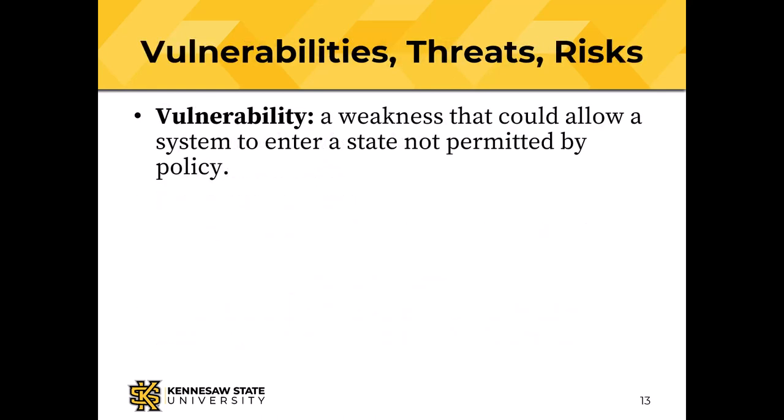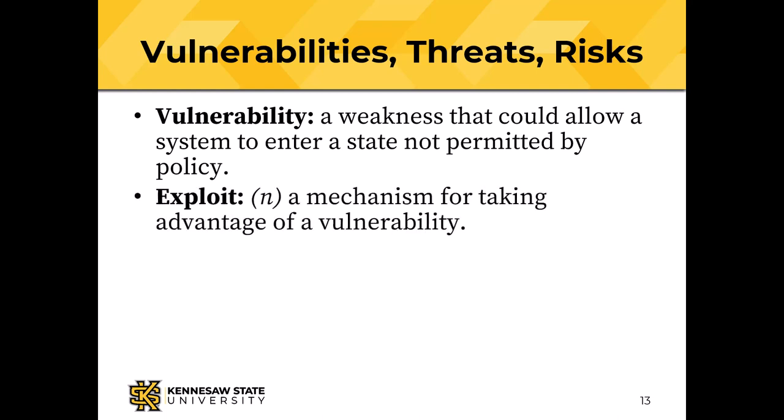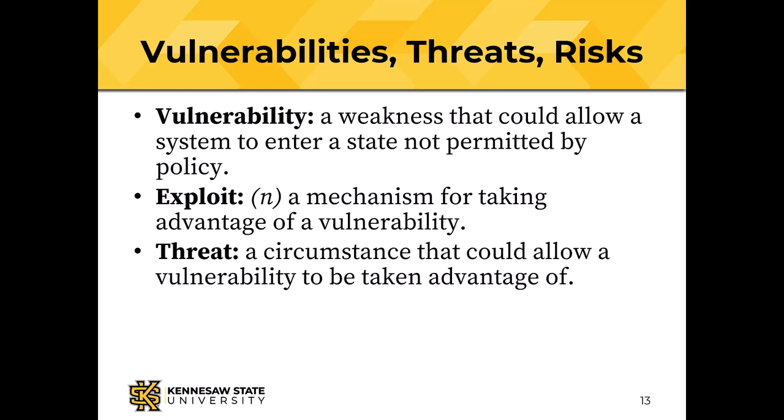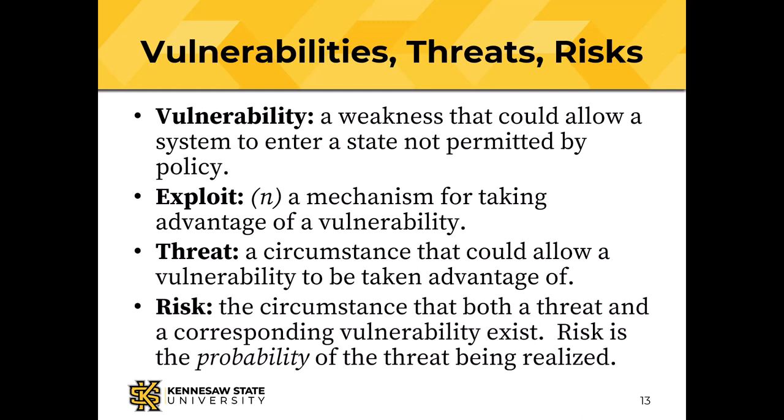Some more vocabulary: a vulnerability is a weakness in a system that could allow it to enter a state not permitted by policy. An exploit — this is a noun — is a mechanism for taking advantage of a vulnerability. A threat is a circumstance that could allow the vulnerability to be exploited. We need all three of those things: the vulnerability, the exploit, and the threat. If we can get rid of any one of them, we have improved security.